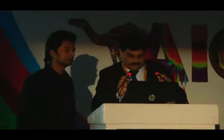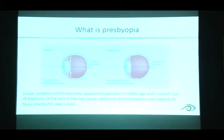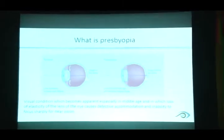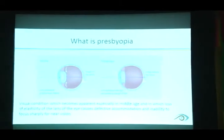I'll be talking about addressing presbyopia. Presbyopia is a visual condition which becomes apparent especially in middle age, in which loss of elasticity of the crystalline lens of the eye causes defective accommodation and inability to focus sharply for near vision.